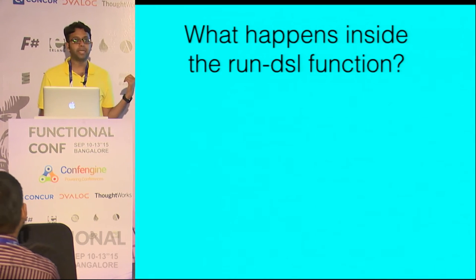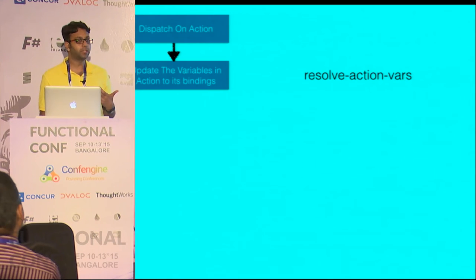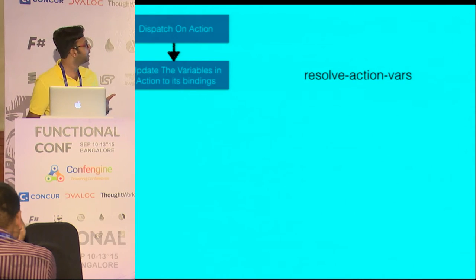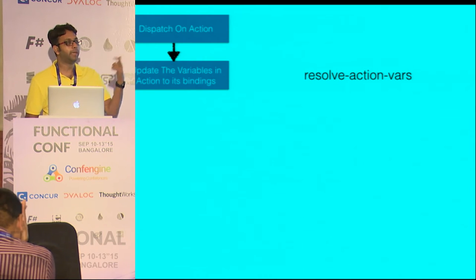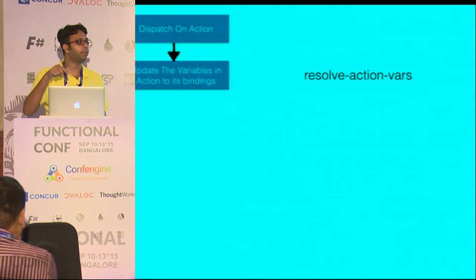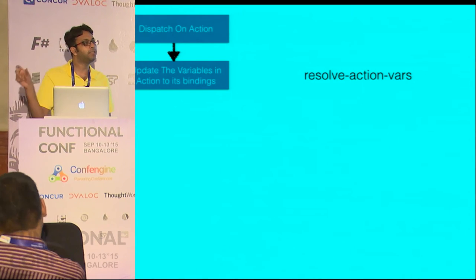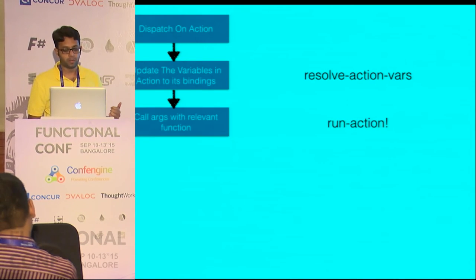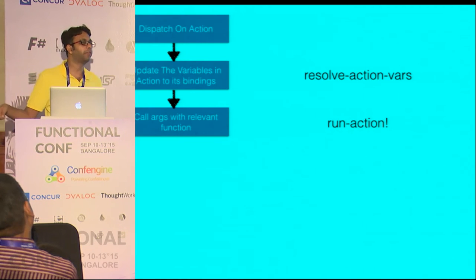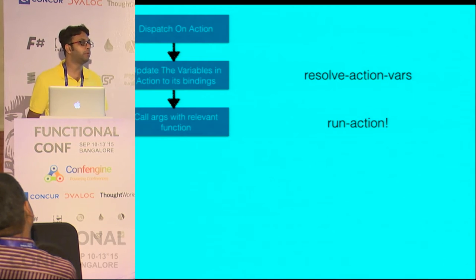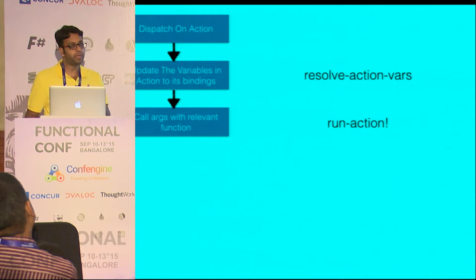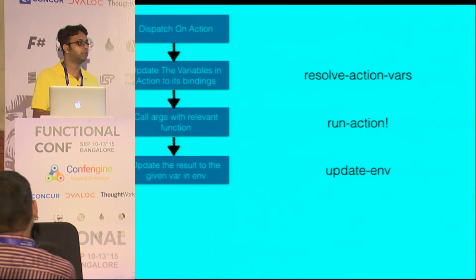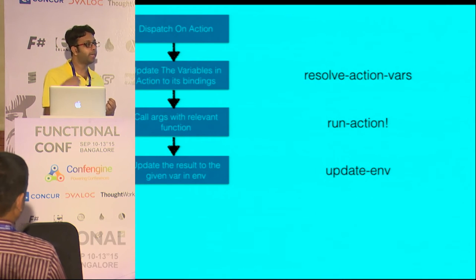What happens inside the run DSL function? You dispatch on each action. First you need to update the variables in the actions to their bindings. So when I say app 1 in my argument — when I try to add an FAQ — I need to understand what app 1 really means, what is the ID of that. I need to put that back in the action. Then you actually need to call the actual function which will do the side effect — that's part of your actual implementation — which will be done by the run action function. And then you use the result to bind it back into the environment.